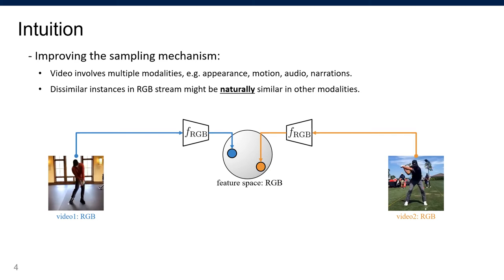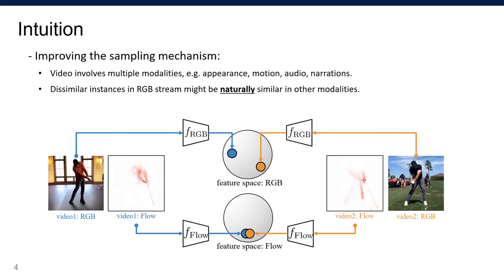Take this golf swing action for example. In RGB space, clothing and backgrounds are different. But in the optical flow space, they are naturally very similar.